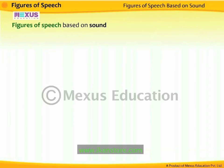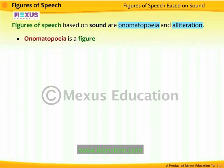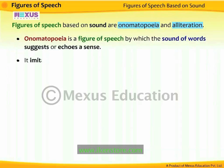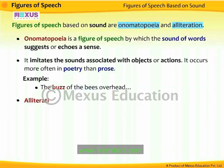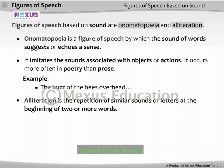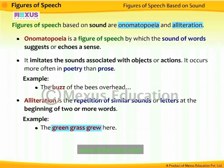Figures of speech based on sound are onomatopoeia and alliteration. Onomatopoeia is a figure of speech by which the sound of words suggests or echoes a sense — it imitates sounds associated with objects or actions, and occurs more often in poetry than prose. For example, 'the buzz of the bees overhead' — the word 'buzz' echoes the sound made by bees. Alliteration is the repetition of similar sounds or letters at the beginning of two or more words. For example, 'the green grass grew here' — green, grass, grew is an alliteration.